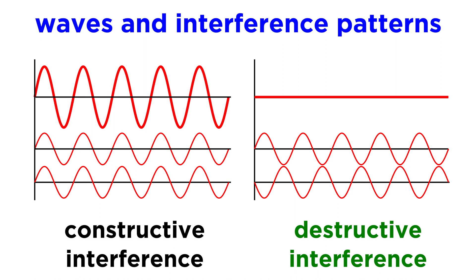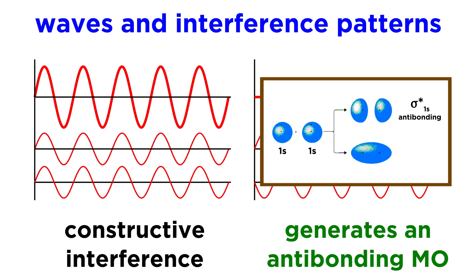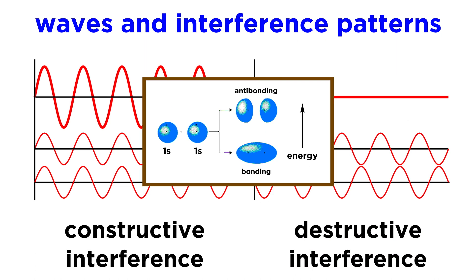There can also be destructive interference, where the peaks line up with troughs. This causes the amplitude to drop to zero, resulting in an antibonding orbital, like this sigma s star orbital. Here there is a node between the nuclei, which weakens the bond. The bonding orbital is of lower energy and will thus be filled before the antibonding orbital.